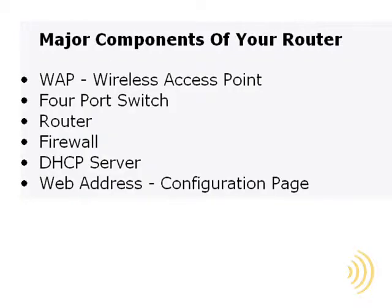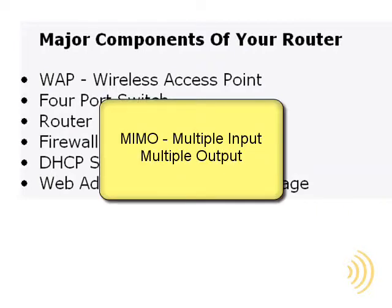Most N routers, and some G routers, come with something called MIMO, which stands for Multiple Input Multiple Output. It uses something called spatial multiplexing to literally flood your area with multiple signals. These multiple signals bounce around and actually increase each other's signal strength. The result is wider range and fewer dead spots.